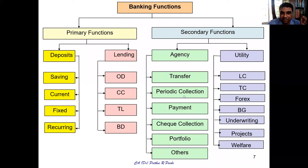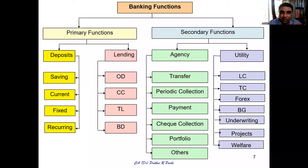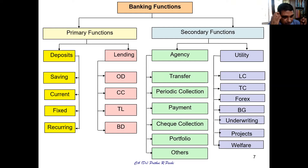Agency functions include: transfer of funds, periodic collection, payment, check collection, portfolio management, and others. These are certain agency functions performed by the bank. The bank works as the customer's agent — money may be transferred, periodic collections can be made, payments can be executed, checks deposited can be collected, and the customer's portfolio investment management can also be done by the bank.